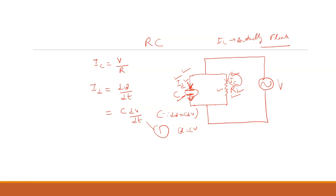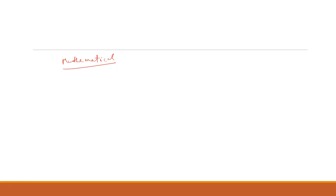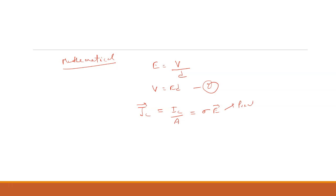Now let us discuss on what factors these two currents or current densities depend — the mathematical proof. The electric field inside each element equals the voltage divided by its length, so E equals V by D, or V equals ED — equation number two. The current density in the resistor is given by JC equals IC by A, which also equals sigma times E. This is the point form of Ohm's law, where A is the cross-sectional area and sigma is the conductivity — equation number three.